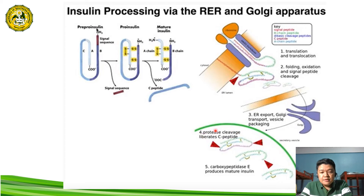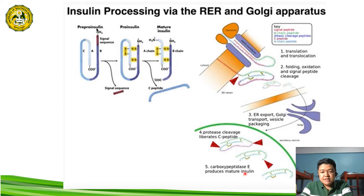After the protease enzyme cleaves off the C peptide — which connects the B chain and the A chain of the proinsulin — the C peptide is removed to form the mature form of insulin. Another important process is the removal of the amino acid residues attached to the C terminal of the raw insulin; these residues need to be cleaved off first in order to form the mature insulin.